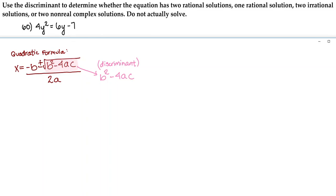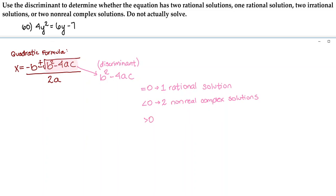If the discriminant is equal to 0, then you're going to have one rational solution. If the discriminant is less than 0, then you're going to have two non-real complex solutions. If the discriminant is greater than 0, it can go one of two ways: if it's a perfect square — for example, 25 — then you'll have two rational solutions.